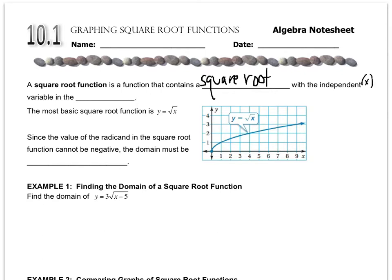And the radicand is the number that's underneath the square root. So the x has to be underneath the square root for it to be a square root function.